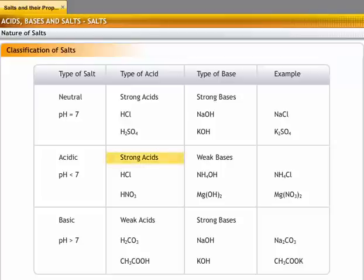Salts formed from strong acids and weak bases are called acidic salts. They have a pH value less than 7. Consider the formation of salts like ammonium chloride and magnesium nitrate which are formed from strong acids like hydrochloric acid and nitric acid with weak bases like ammonium hydroxide and magnesium hydroxide.